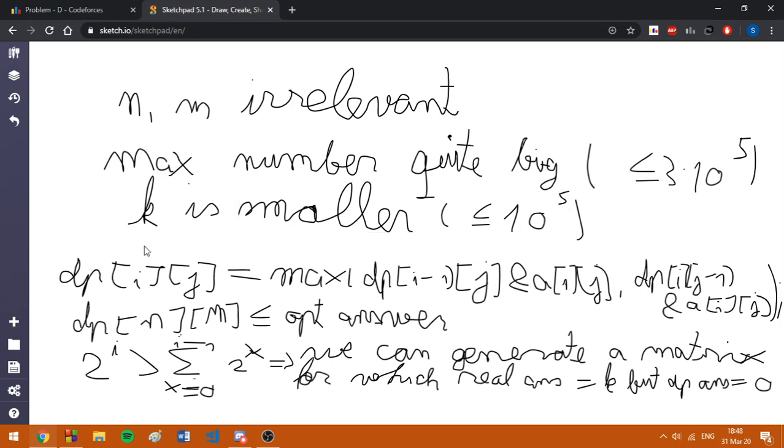Let's have a look at the DP algorithm. We have a maximum between DP of i-1,j AND A of i,j and DP of i,j-1 AND A of i,j.